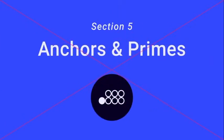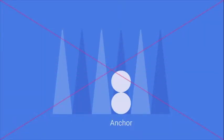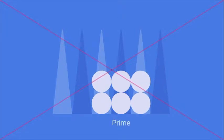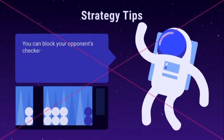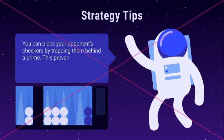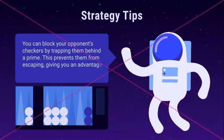Section 5: Anchors and Primes. Two or more checkers on a point is called an anchor. An opponent's checkers can't move to your anchors as you're occupying these points. When anchors are placed next to each other, it's called a prime. You can block your opponent's checkers by trapping them behind a prime. This prevents them from escaping, giving you an advantage in the race.